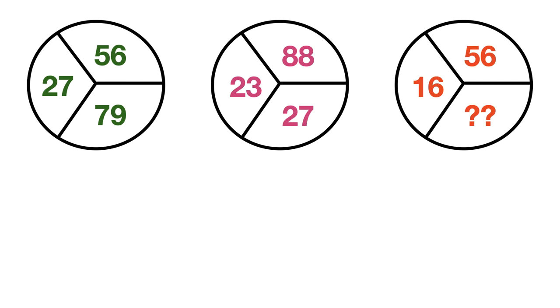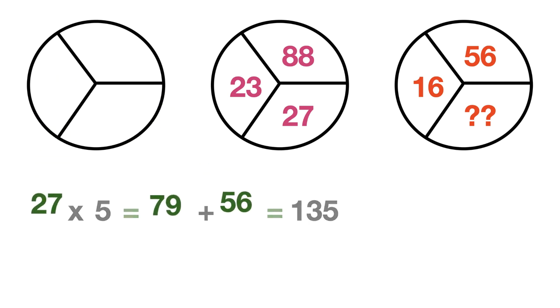So let's consider the first circle. Here the left number is 27 and sum of other two numbers is 56 plus 79 which equals to 135. Now multiply the left number, that is 27, with 5 which yields 135, which is nothing but the sum of other two numbers on the right side. So in the first circle, 27 times 5 equals 56 plus 79 which is equal to 135.